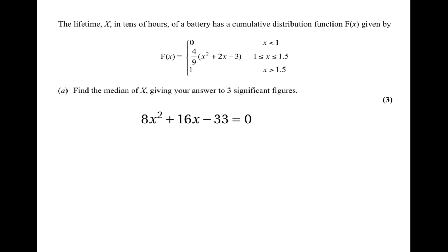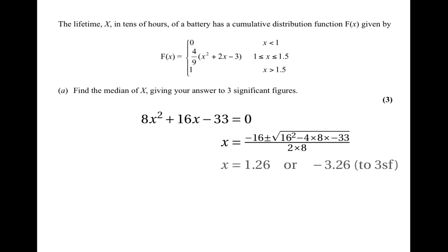We can't factorise that, so we use the quadratic formula: x = (−16 ± √(16² − 4 × 8 × (−33))) / (2 × 8). That gives us two answers: 1.26 and −3.26. But obviously −3.26 isn't a valid answer, so the only correct answer is 1.26.